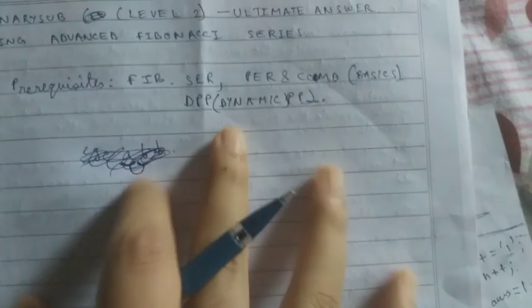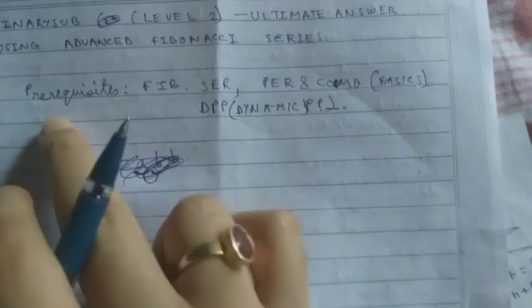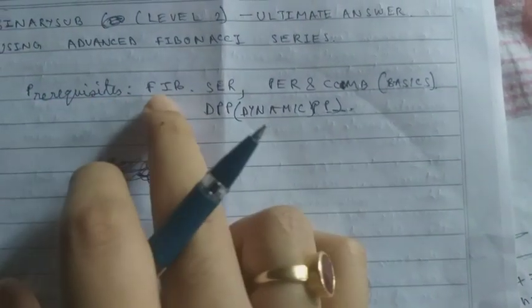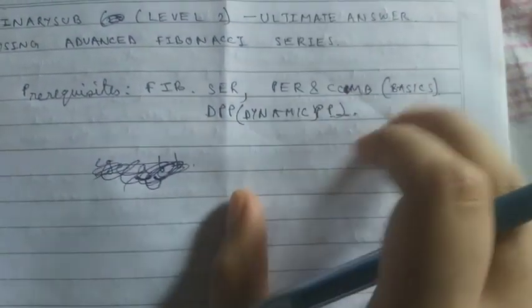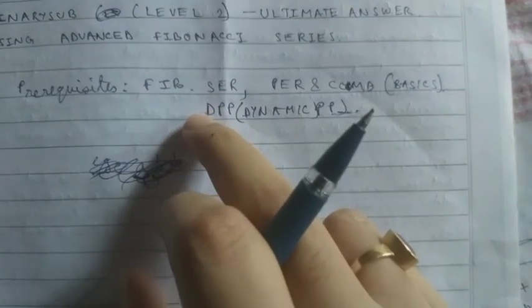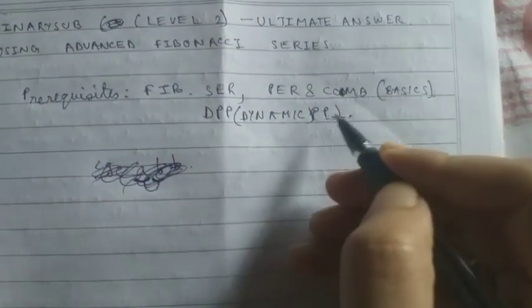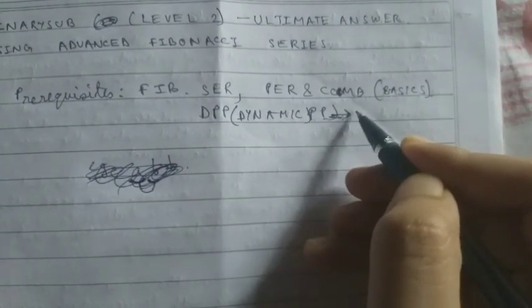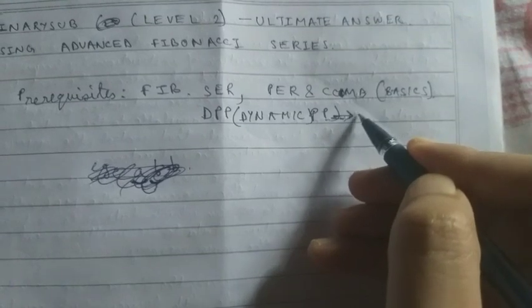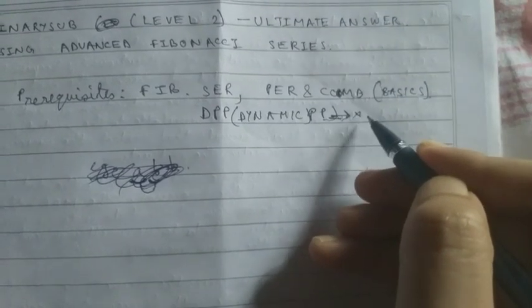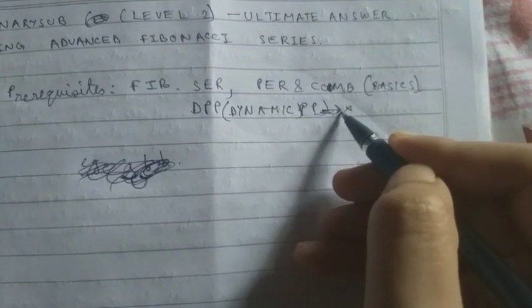So in this video, I am going to discuss about level two of the solution. The prerequisites are Fibonacci series, permutation and combination basics, and dynamic programming — though even if you don't know dynamic programming, it will do.